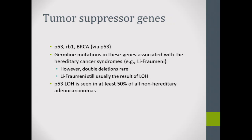Then there are tumor suppressor genes — the brakes of the system. P53 is your classic one involved in many malignancies, but RB1 and BRCA are also tumor suppressor genes. Classic syndromes include Li-Fraumeni, which is a germline mutation. Under the two-hit hypothesis, you've already had one hit from the hereditary side, making patients much more likely to develop malignancy — with associations including breast, colon, ovarian, and many others.